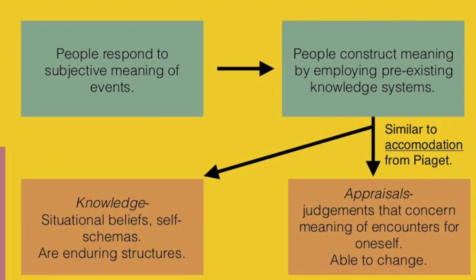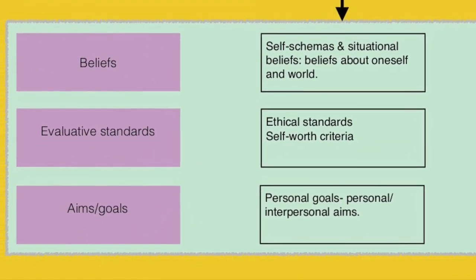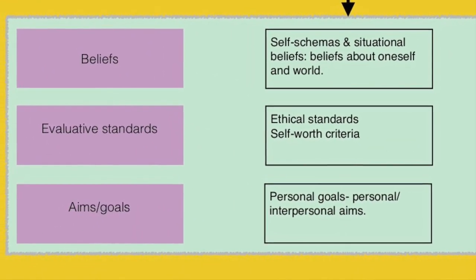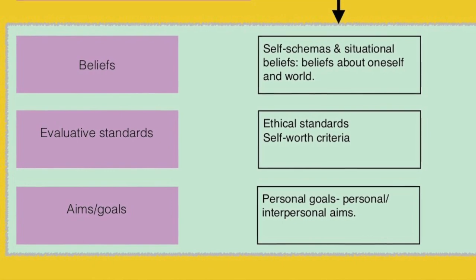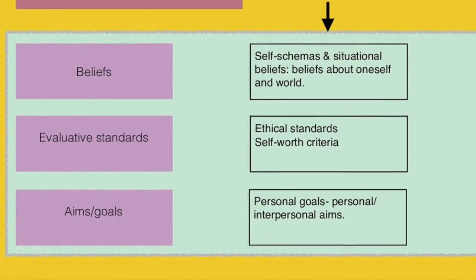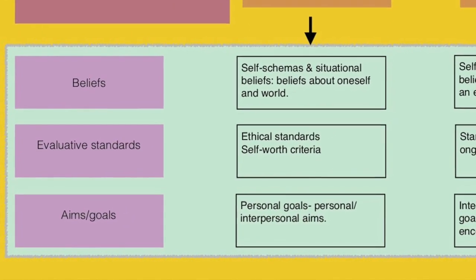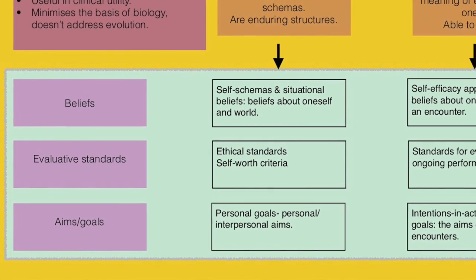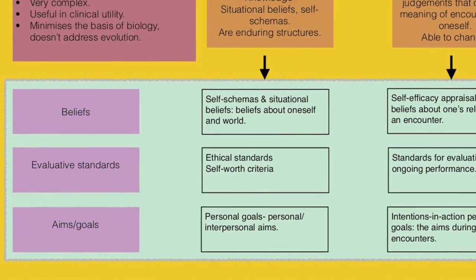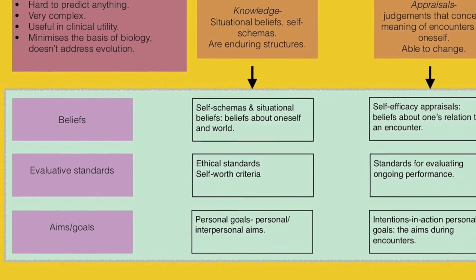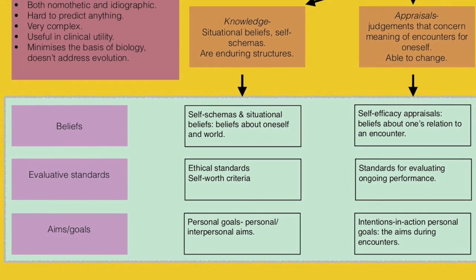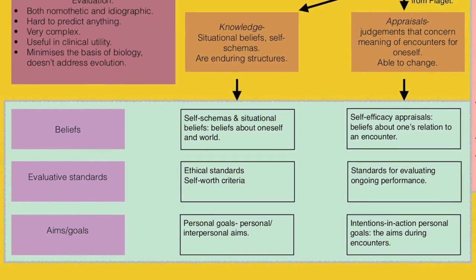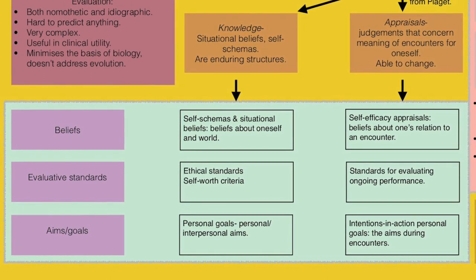This then feeds into beliefs, evaluative standards, and aims or goals, which makes up the crux of this whole theory of the Knowledge and Appraisal Personality Architecture. Examples of beliefs, which are a type of knowledge, include self-schemas and situational beliefs, like beliefs about oneself and the world, as well as appraisals such as the self-efficacy appraisal, which are beliefs about one's relation to an encounter.